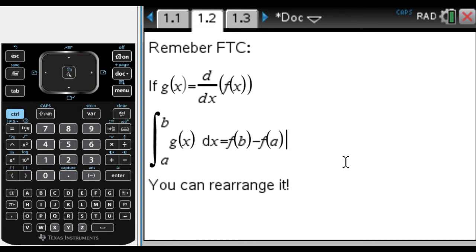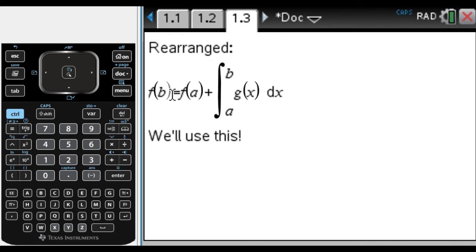That's the fundamental theorem, but you can rearrange it. In particular, I could add f(a) to both sides, and that's what I'm going to do. So f(b), where we end up, is f(a) plus the integral from a to b of g(x)dx. So it's where you are plus your displacement. We're going to use this to solve the problem. Let's go back to that first page.